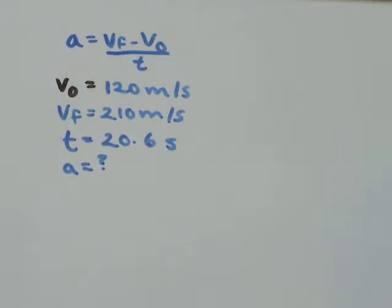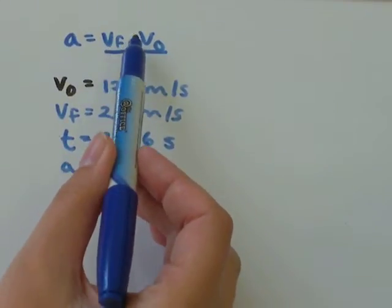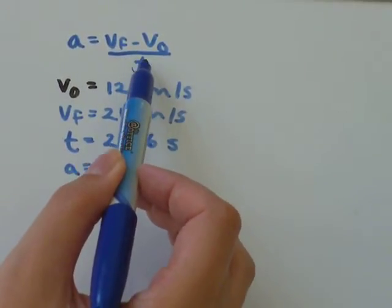In this particular video, we're going to work with this formula: a equals Vf (v final) minus V₀ (v naught, or v initial) divided by time.